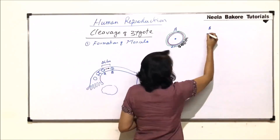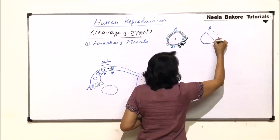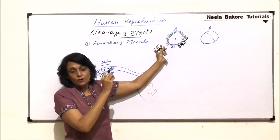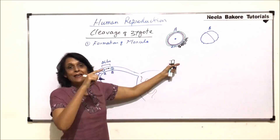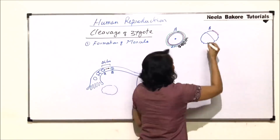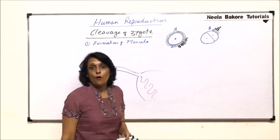If we draw the next stage, the first division takes place — this is the zygote and now it has divided. The division is through the animal and vegetal pole. This was the animal pole, where the nucleus of the egg was. The entry of sperm also takes place from the animal pole. And the first zygotic division is also through the animal and vegetal pole. The membranes are intact around it — the vitelline membrane, zona pellucida, and corona radiata — all these layers are as they are.